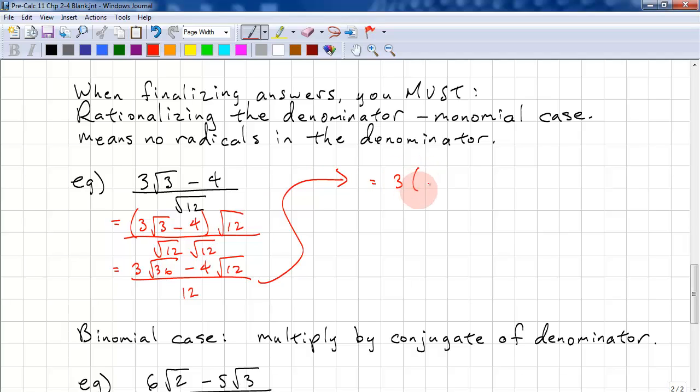A little bit more simplifying. We have 3 times 6. Square root of 36 is 6. And we need to simplify this. We can pull out a perfect square of 4. So, we have 4 times 2 because the square root of 4 is 2. We're left with square root 3 all over 12. So, we have 18 minus 8 root 3 over 12. So, there's no radical in the denominator. However, this must be simplified. A common factor between all three constants is 2. So, 9 minus 4 root 3 over 6. We're dividing by 2 over 2. We can always multiply and divide by 1 without changing the answer. So, that's what we're doing when we're simplifying.